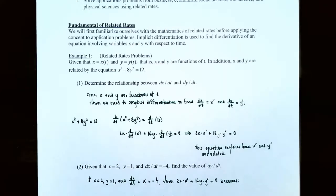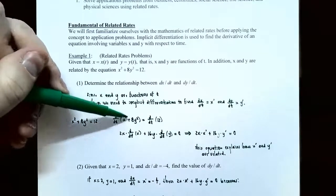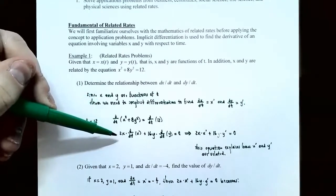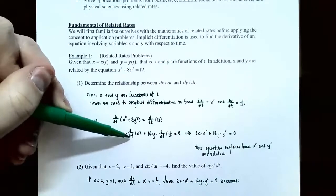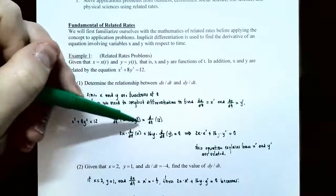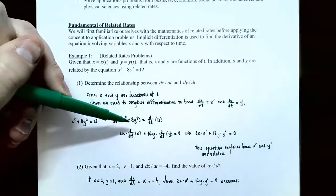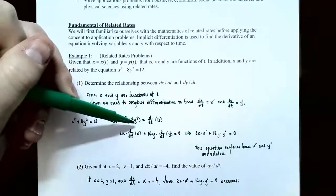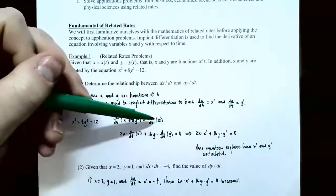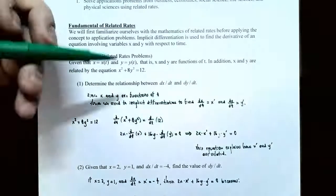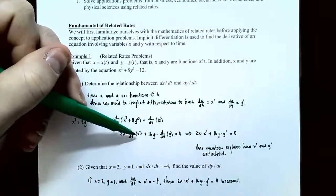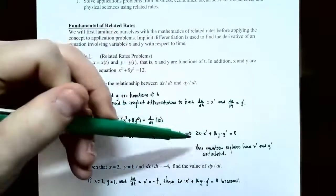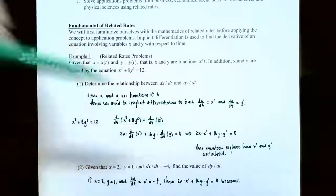Every time you take the derivative of y, use the chain rule to get y prime as well. The derivative of x squared is 2x times x prime. The derivative of 8y squared is 16y times y prime. The derivative of 12 is 0. So after simplifying: 2x times x prime plus 16y times y prime equals 0. This equation explains how x prime and y prime are related.